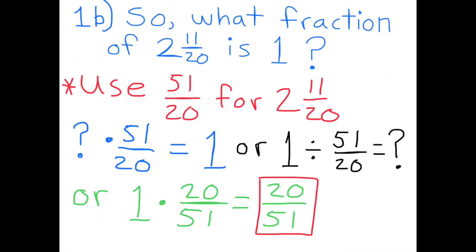Use fifty one-twentieths to represent two and eleven-twentieths. What number times fifty one-twentieths equals one? Or: one divided by fifty one-twentieths equals what number? One times twenty over fifty-one equals twenty over fifty-one. So twenty over fifty-one represents the fraction of an inch that one centimeter represents.